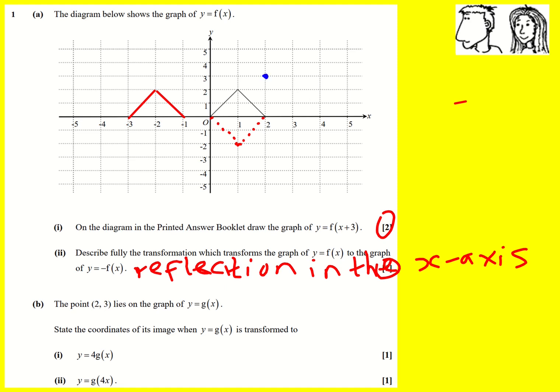And then state the coordinates of its image - that means like what happens after you've transformed it - when y=g(x) is transformed to y=4g(x). So we need to realize this is a stretch of factor four in the y direction. So this blue point here is going to go off the graph, it's going to go up here somewhere.